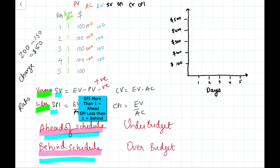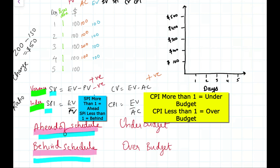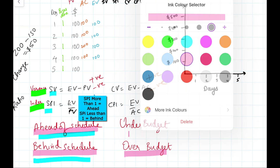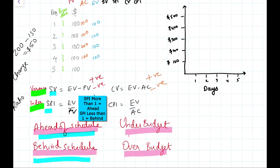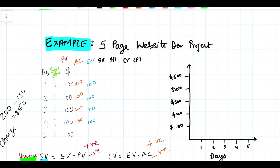Similarly for cost: CV is cost variance. If the cost variance is positive, you are under budget — you have more money. If the cost variance is negative, you are over budget — you have less money. The same logic applies to the cost performance index: positive means under budget, negative means over budget.